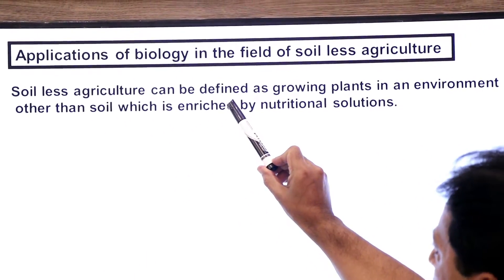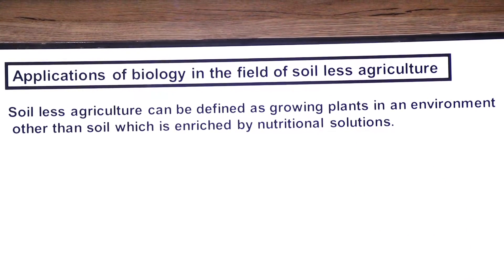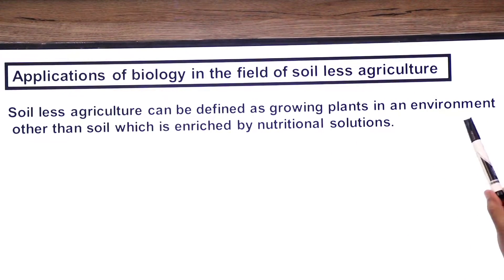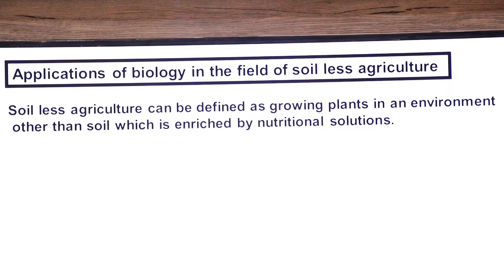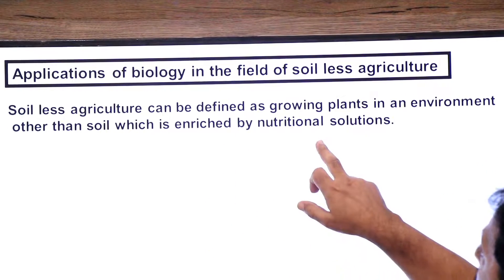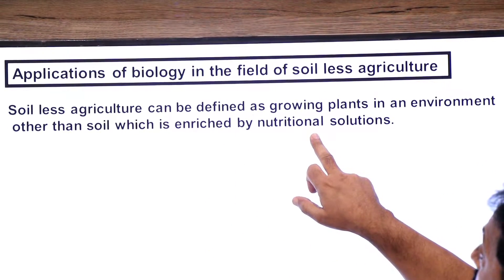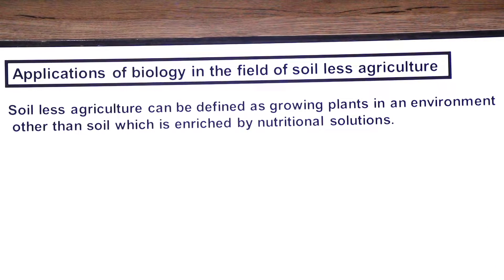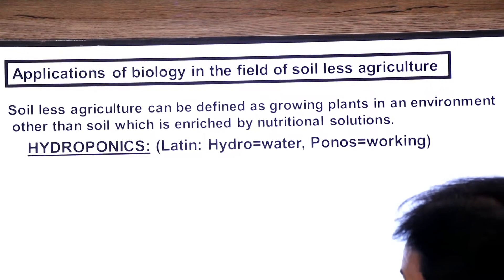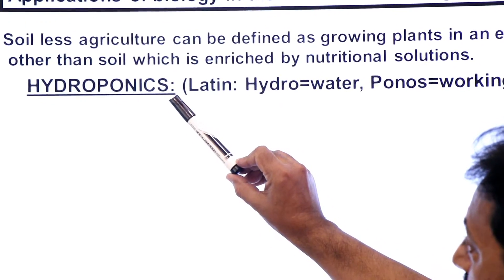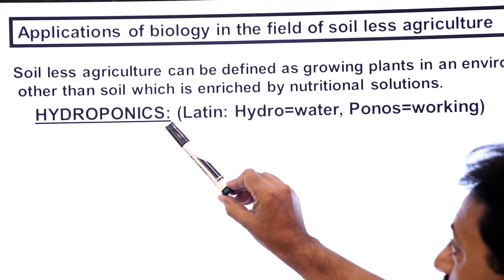Soilless agriculture can be defined as growing plants in an environment other than soil, which is enriched by a nutritional solution. Through the nutritional solution, nutrition is provided to the roots of plants, but soil is not used. The technique we are going to study today in soilless agriculture is called hydroponics.